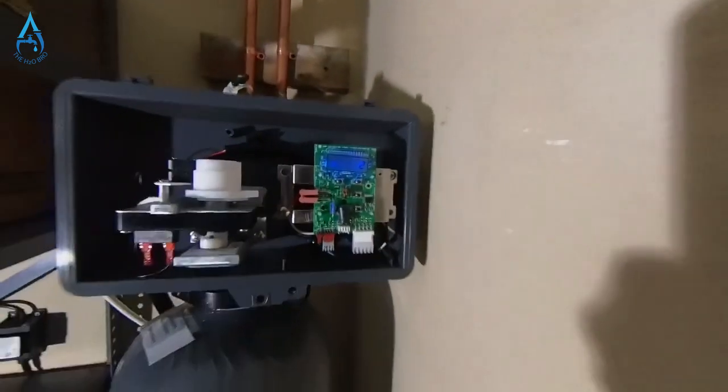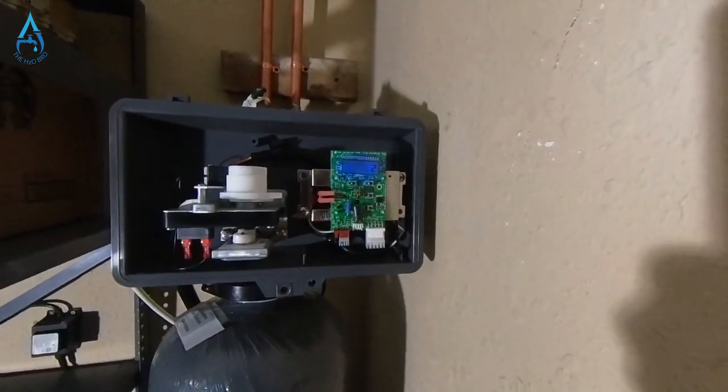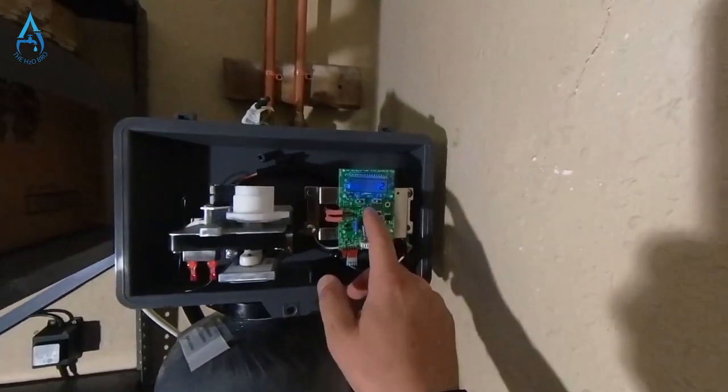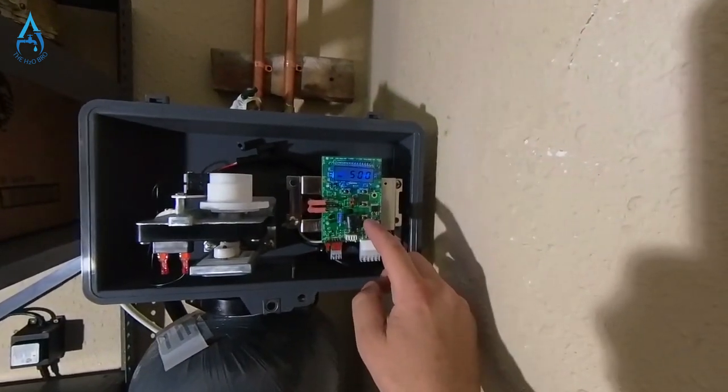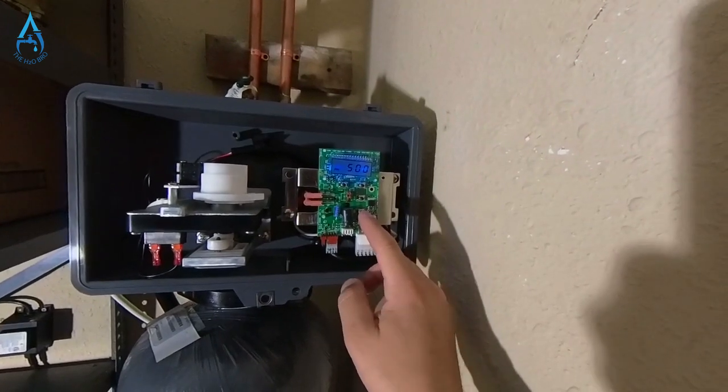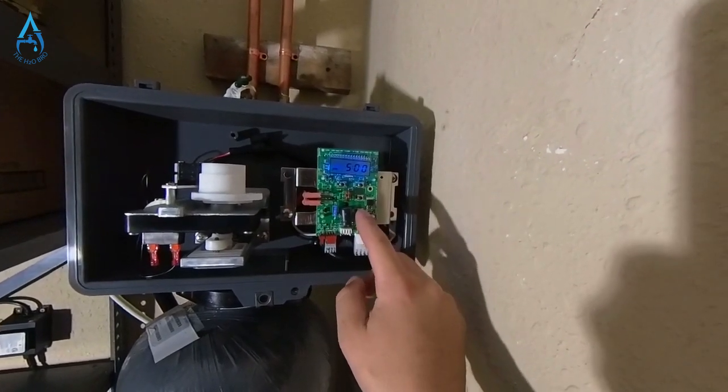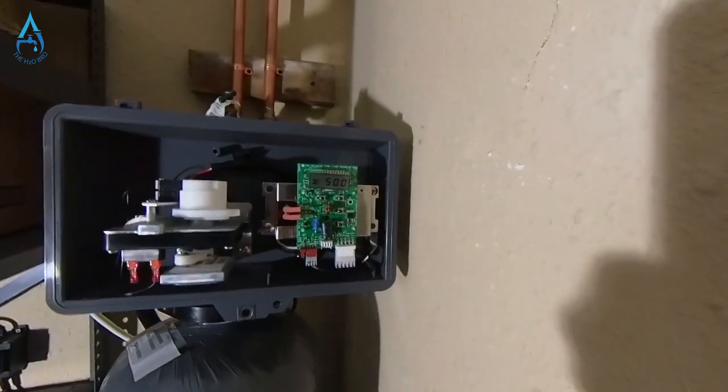Number three is you're going to want to make sure that your water softener is creating vacuum. By doing that, you're going to have to do a manual regeneration, which is here - the bottom button. You're going to hold it, and it's going to go into regeneration.